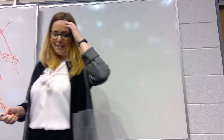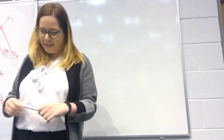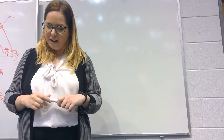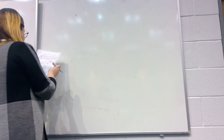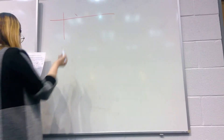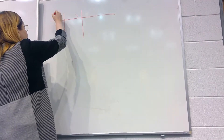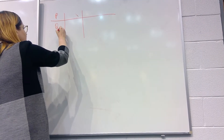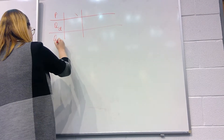We are moving on to question three, which states: the weekly demand and supply schedules for T-shirts in millions in a free market are as follows. We have a table given to us with prices, quantity demanded, and quantity supplied.